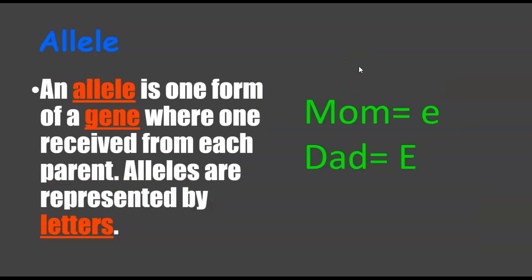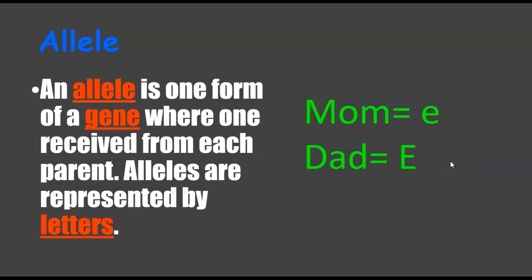Looking at genes, you have something called an allele — one form of a gene where one is received from each parent. Alleles are represented by letters, such as lowercase e or capital E. The size matters: capital means dominant, and it will take over a lowercase, which is called recessive. We'll get to that in a bit.